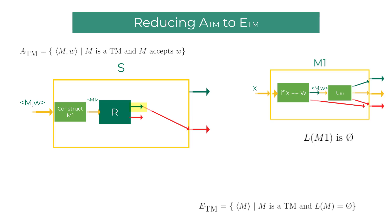Now let's say ETM decider R rejects the machine description M1. It means the language of M1 should be non-empty. This is where our clever circuitry of M1 again comes to our rescue. The only possible string that can reach the accept state of M1 is W. Any other input string to M1 bypasses the circuitry and directly ends up in reject state.